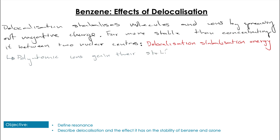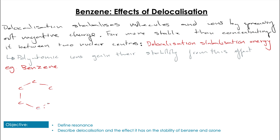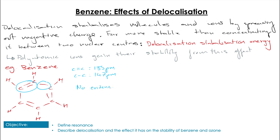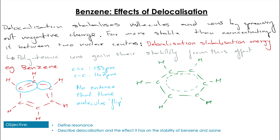We can further illustrate this using values for benzene. If we think of the bond lengths we would expect with alternate single and double bonds, the carbon single and double bond lengths are 147 picometers and 135 picometers respectively. However when we measure with x-ray crystallography we find they are all equal at 140 picometers, indicating the electrons are spread evenly — so instead of single and double bonds we have something more like one-and-a-half bonds all the way around the molecule, making benzene very stable.